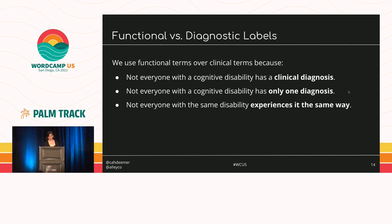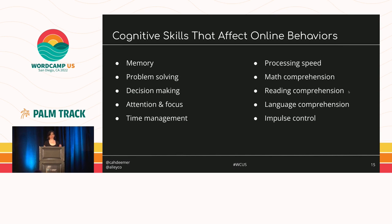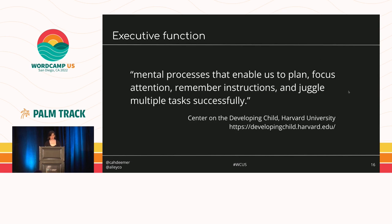And not everyone with a particular disability experiences it in the same way — just because digital content is accessible to one autistic person doesn't mean it's accessible to every autistic person. When it comes to cognitive disabilities, there's very little that is binary or objective; it's all shades of gray. Using functional terms also helps us focus on aspects that impact how people use the web: memory, problem solving and decision making, attention and focus, time management, processing speed, math, reading and language comprehension, impulse control, and executive function — which Harvard's Center for the Developing Child describes as mental processes that enable us to plan, focus attention, remember instructions, and juggle multiple tasks successfully.